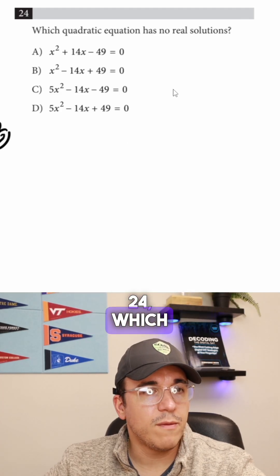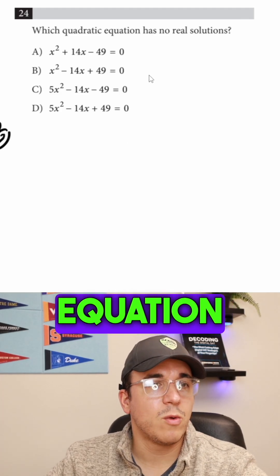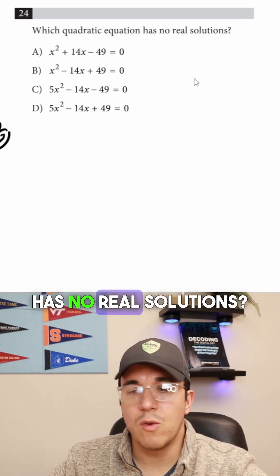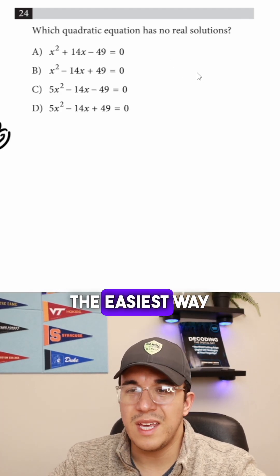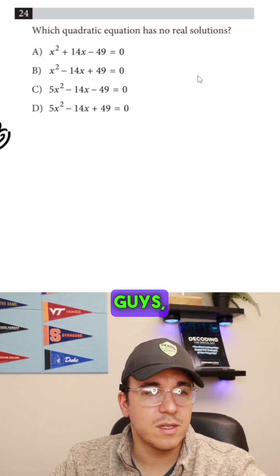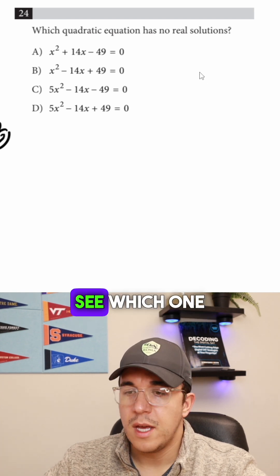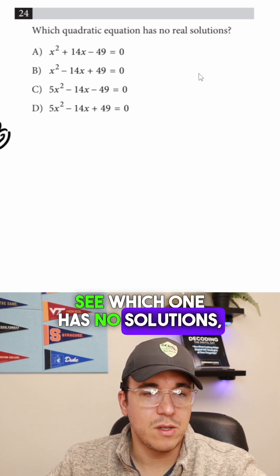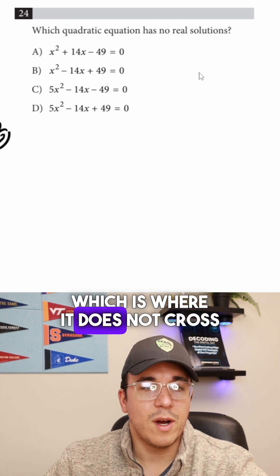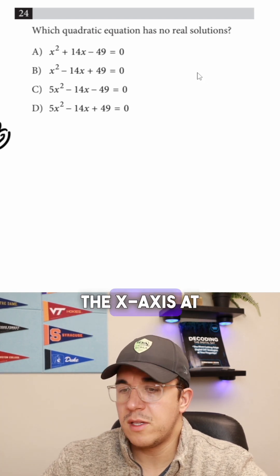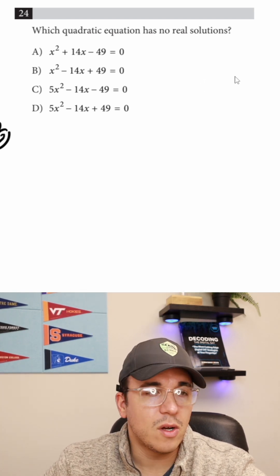Looking at number 24: which quadratic equation has no real solutions? The easiest way to do this is just plug all these into Desmos and see which one has no solutions, which is where it does not cross the x-axis at all.